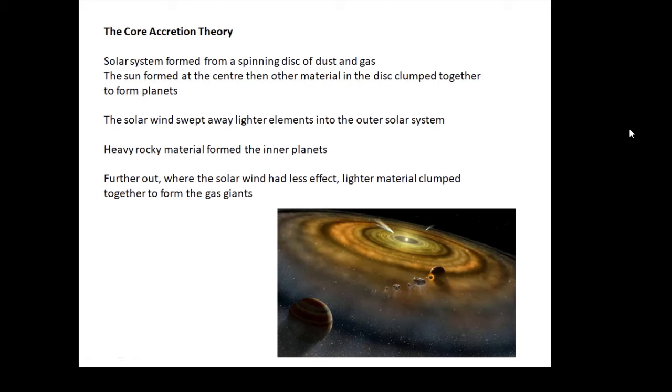The sun formed at the middle, and then when the sun actually lit up—when fusion started and we started getting solar wind—what happened was that the lighter elements, your hydrogens and heliums, were swept out by the solar wind, carried into the outer solar system. Then the heavy rocky material was left behind, and that formed the inner planets. Further out where there was much less solar wind, the lighter material clumped together and that's where you got the gas giants.